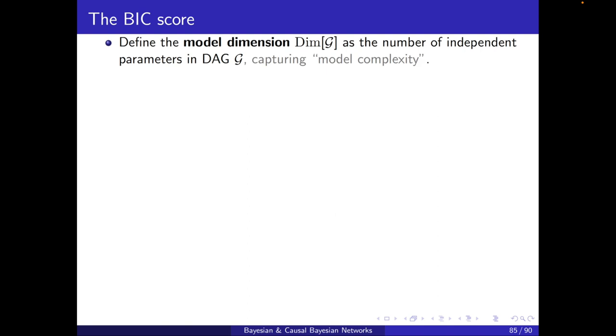To answer this question, let's define the model dimension, dim(G), as the number of independent parameters in the DAG G. This is capturing the model complexity.